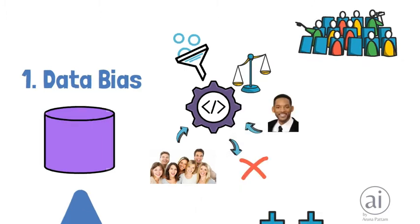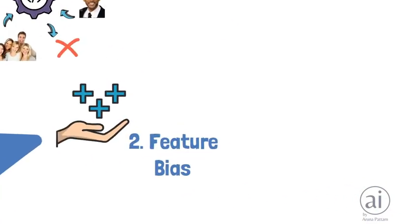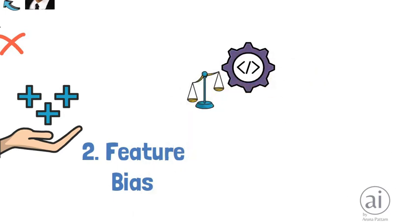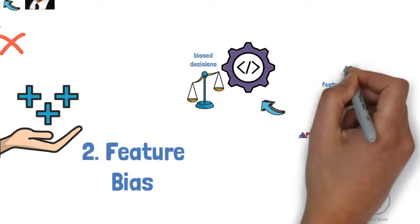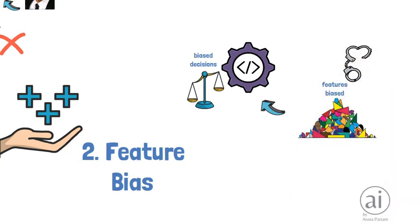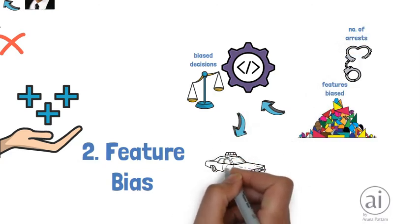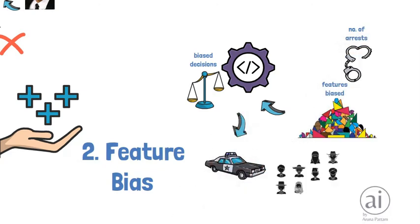Feature bias: a machine learning algorithm will make biased decisions if its features are biased. For example, if a system is trained to detect crimes and one of its features is number of arrests, then it will likely detect crimes that are biased towards a race or ethnicity.